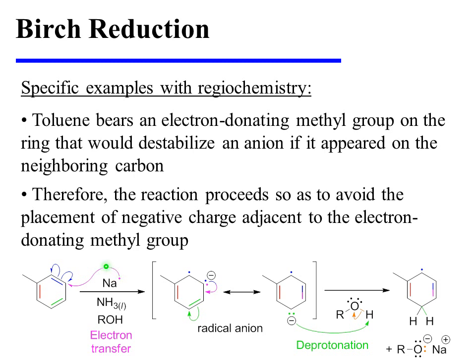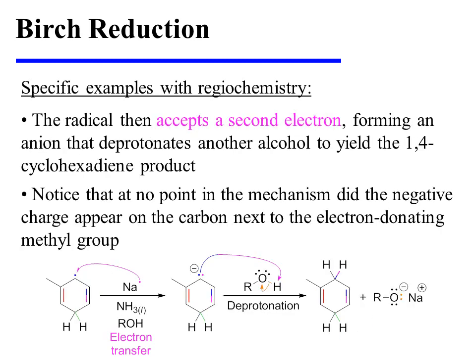Sodium donates its electron to the aromatic ring, generating a radical anion, and the resonance form having 1,4-diene character deprotonates a molecule of alcohol in order to create a radical intermediate. Notice that at no point did the negative charge appear on the carbon directly adjacent to the methyl group. The radical then accepts a second electron from a new atom of sodium, forming an anion that deprotonates another molecule of alcohol to afford the 1,4-cyclohexadiene product.